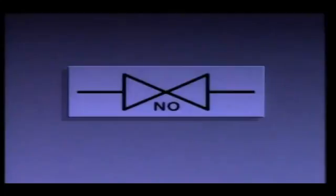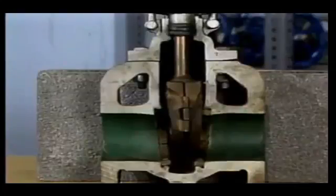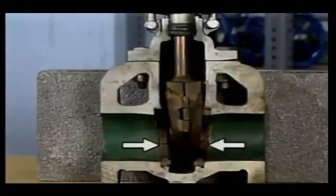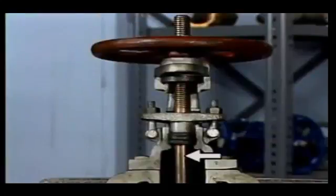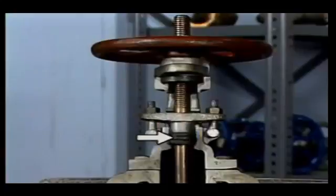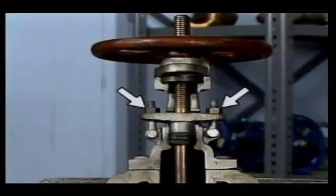Now that we've seen the symbols for a gate valve, let's look at the valve's parts. A gate valve consists of a valve body, a seating area or seat, a disc, a bonnet, a stem with a hand wheel attached to it, a stuffing box, packing, and a packing gland with gland nuts.